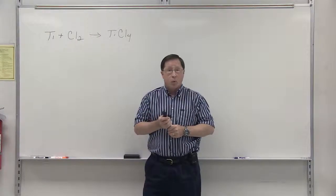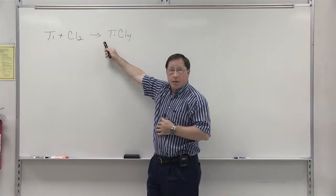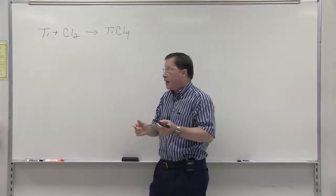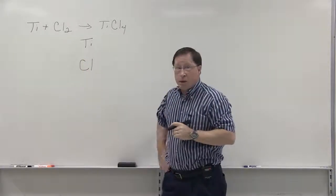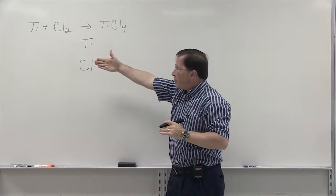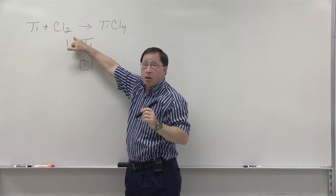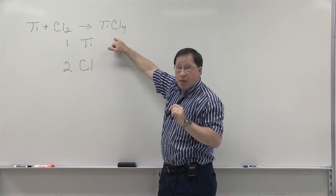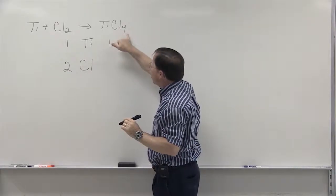The equation that I have on the board is the reaction of titanium plus chlorine to give titanium tetrachloride. To balance this equation, let's begin by counting the atoms. I typically write the atom in the center. On the left-hand side, we have one titanium. The subscript two in chlorine tells us that there's two chlorines. In the titanium tetrachloride molecule, there's one titanium. There are four chlorines.